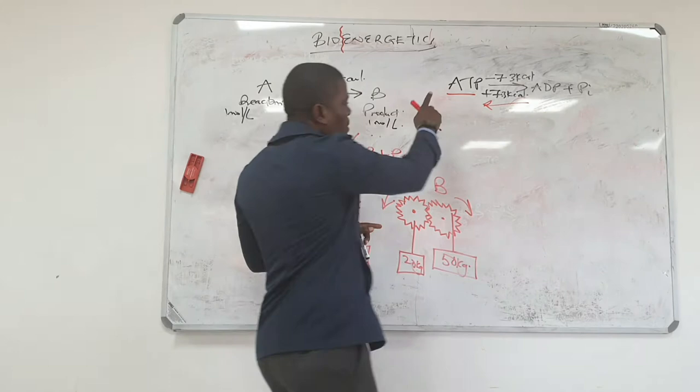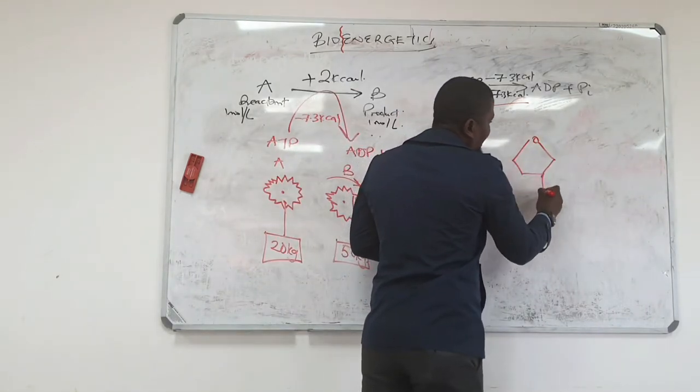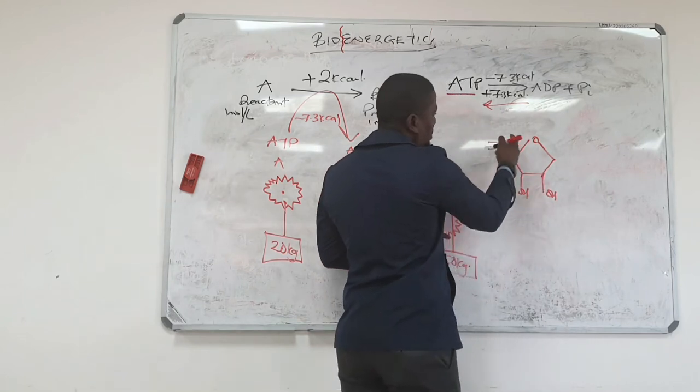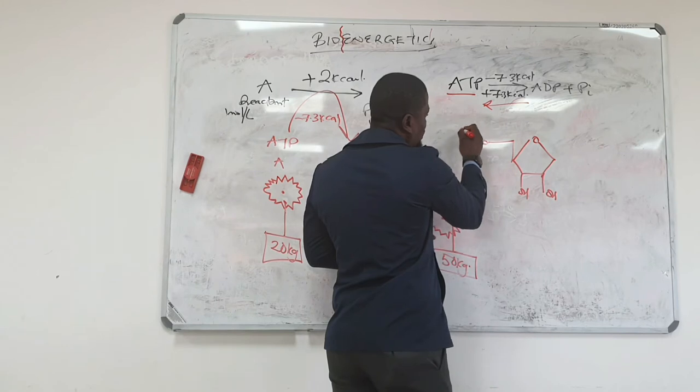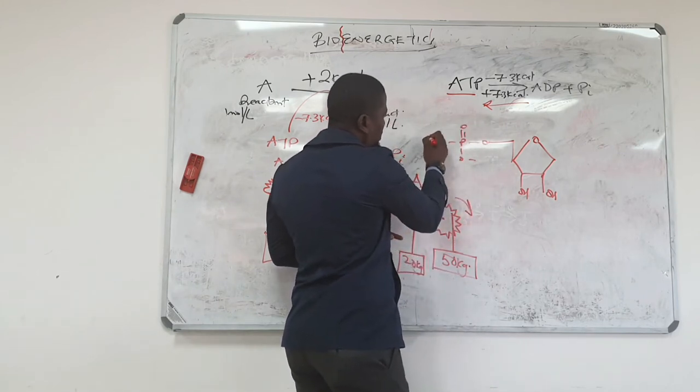Let me show you. When you look at the structure of ATP, ATP has a pentose sugar ribose which is actually attached to three phosphates.